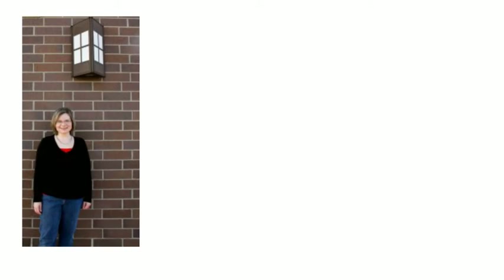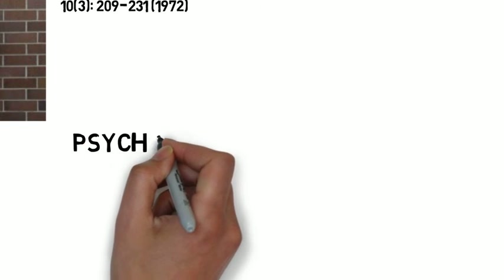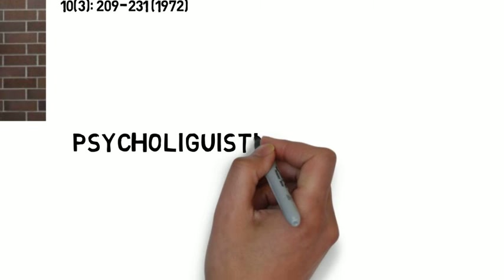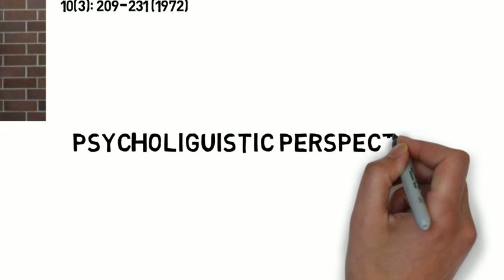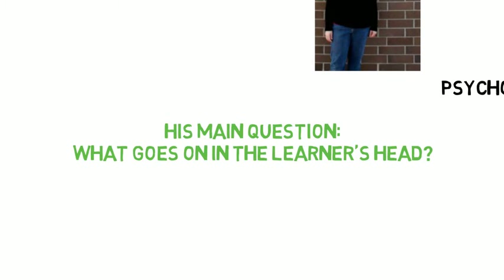Larry Selinker's article titled Interlanguage appeared in the 1972 edition of the International Review of Applied Linguistics and changed the face of second language acquisition research. To fully understand what the Interlanguage article is about and what it meant, we need to understand that Selinker came at the issues from a psycholinguistic perspective, addressing the psychology of an adult learner. And he carefully distinguished between the teacher perspective and the learner perspective. His concern was the learner. So does that mean we as teachers don't have anything to glean from it? Definitely not.